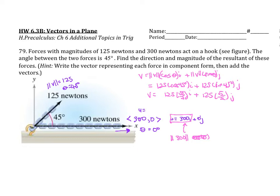So in order to find the resultant vector, we're going to add u plus v. So that is going to be 125 root 2 over 2 plus 300, and that's our horizontal component i, plus 125 times root 2 over 2, and plus 0. So that doesn't change anything.